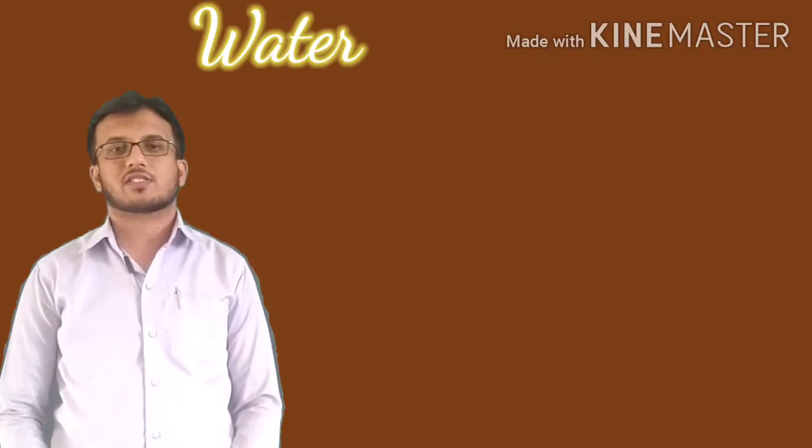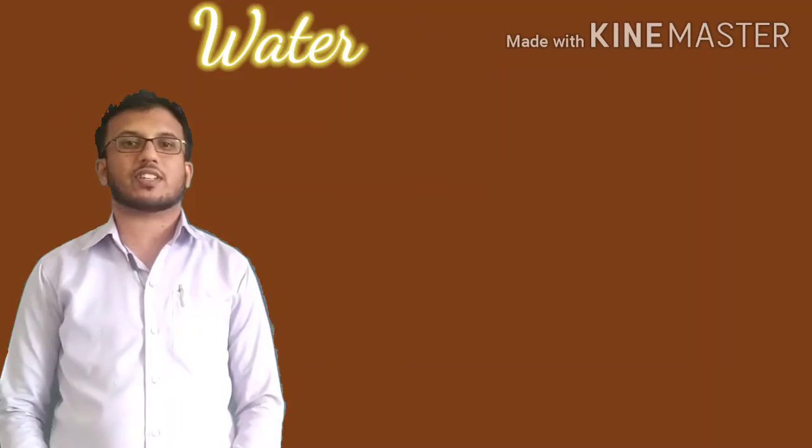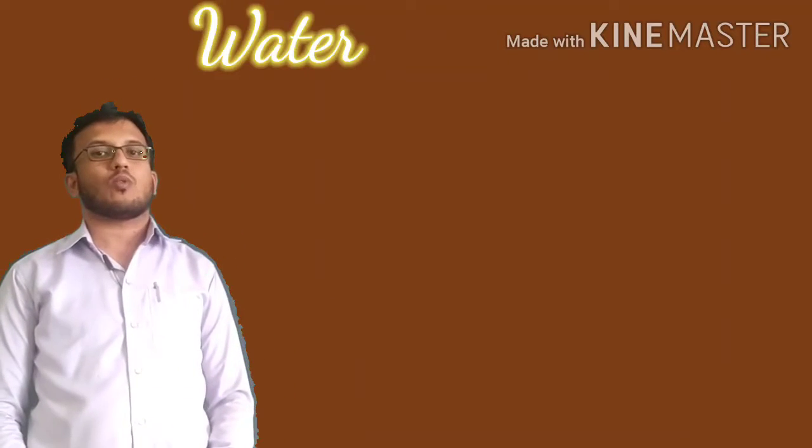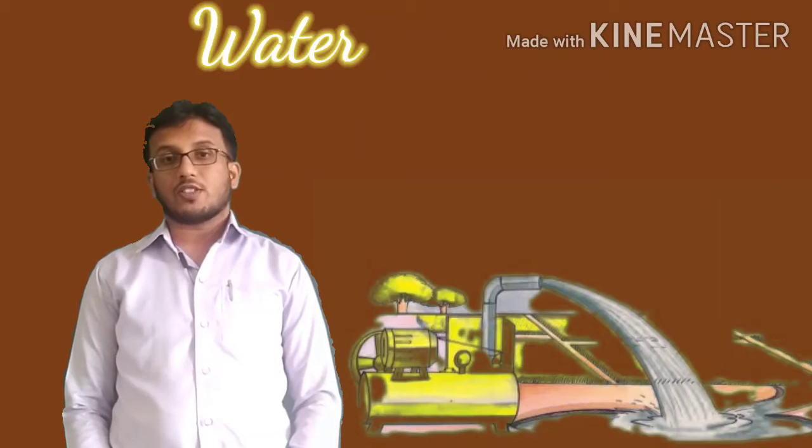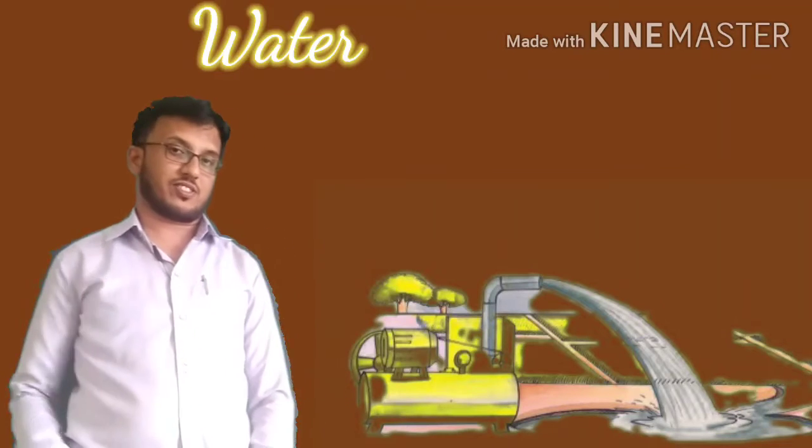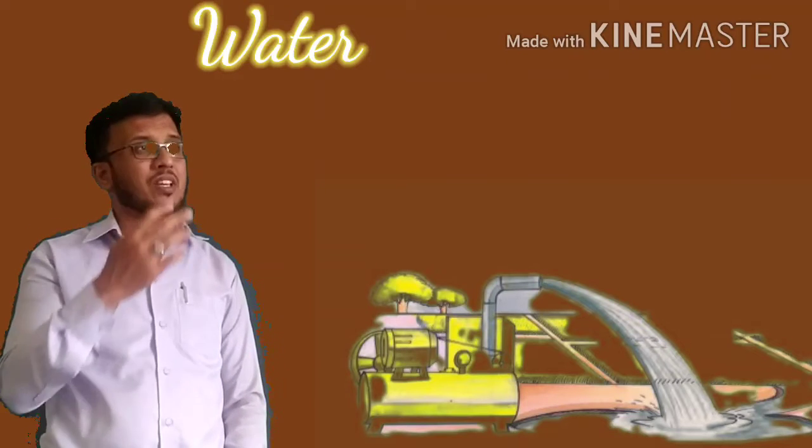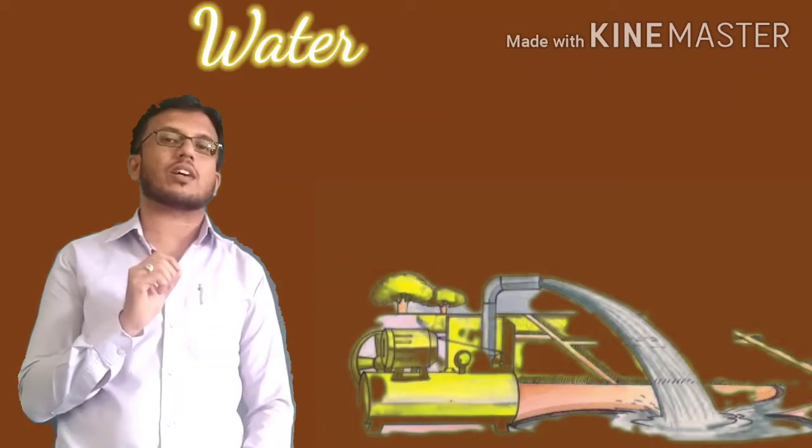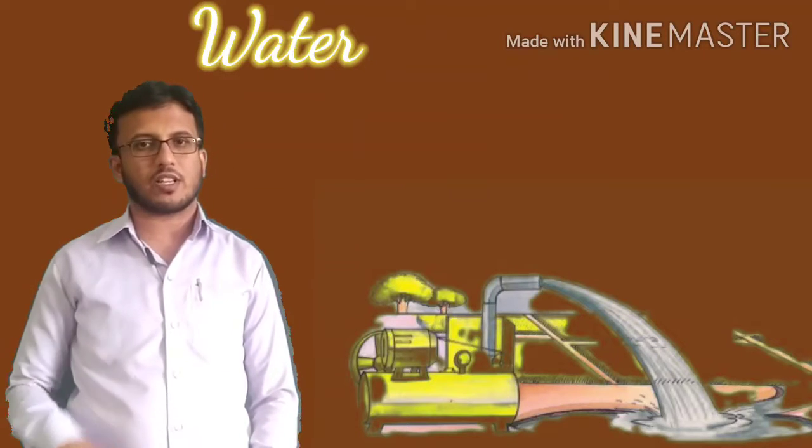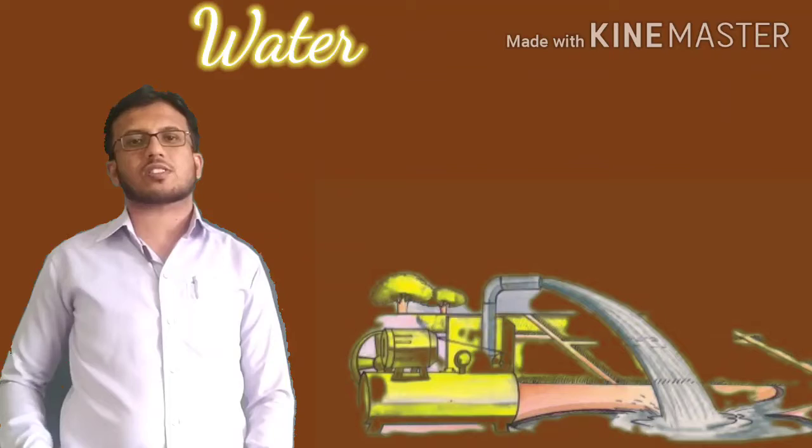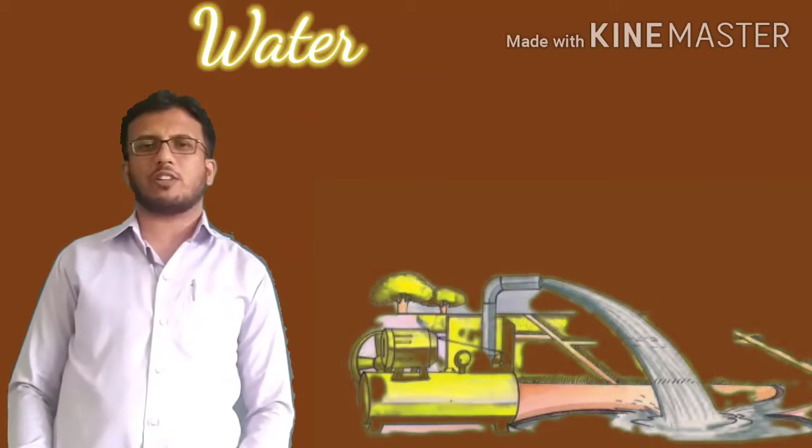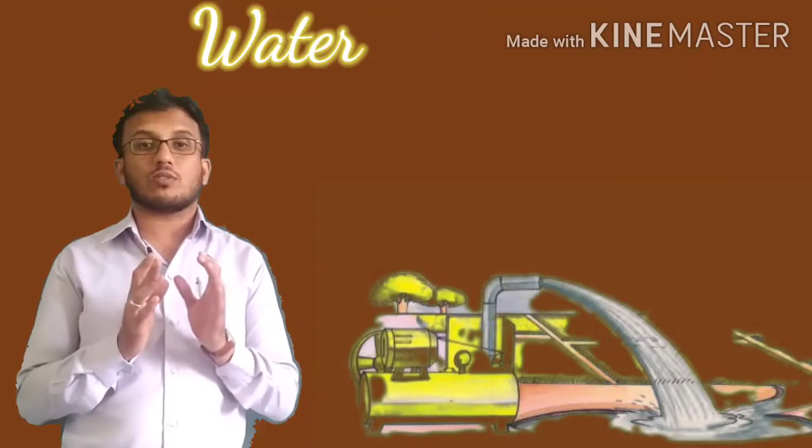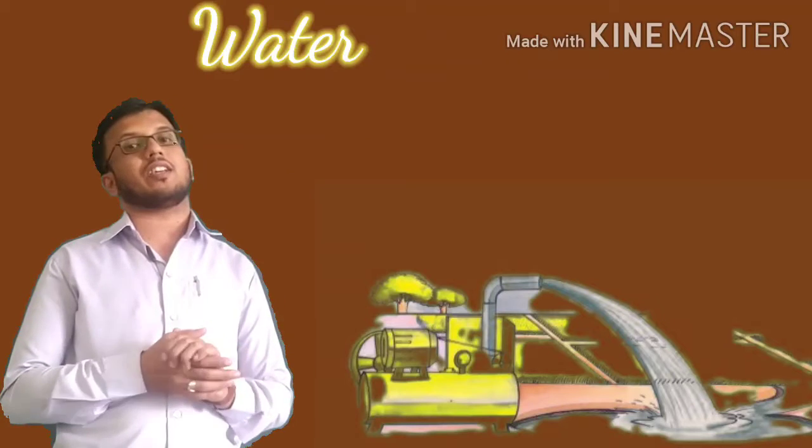The next aspect is water we are using for irrigation purposes. Irrigation purposes means the agricultural farms need water. It is very necessary in the growth of the plants and to obtain the crops. Water is very important.